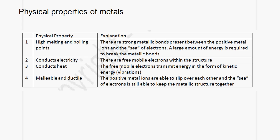Metals also conduct heat, and this also has to do with the free mobile electrons. The free mobile electrons transmit energy in the form of kinetic energy. So if one end of a metal is heated, the electrons gain kinetic energy and begin to move around the structure. When they collide with the positive metal ions, they give up some of this energy, and what is happening is that the vibrations move throughout the structure. Remember that the temperature of an object is proportional to the kinetic energy of the molecules or particles that make up the object.